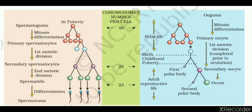Meiosis 2 then occurs — the secondary spermatocyte undergoes meiosis 2 to form spermatids. The ploidy is again haploid, that is 23. Each spermatid then undergoes spermiogenesis, where morphological changes occur and they become active, motile spermatozoa.